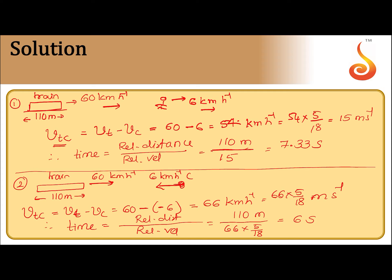Observe how the problem is solved — it is straightforward. The only idea used is: time taken equals relative distance divided by relative velocity. Relative velocities add up when the particles are moving in opposite directions, and relative velocity is obtained by subtracting individual velocities when they move in the same direction.